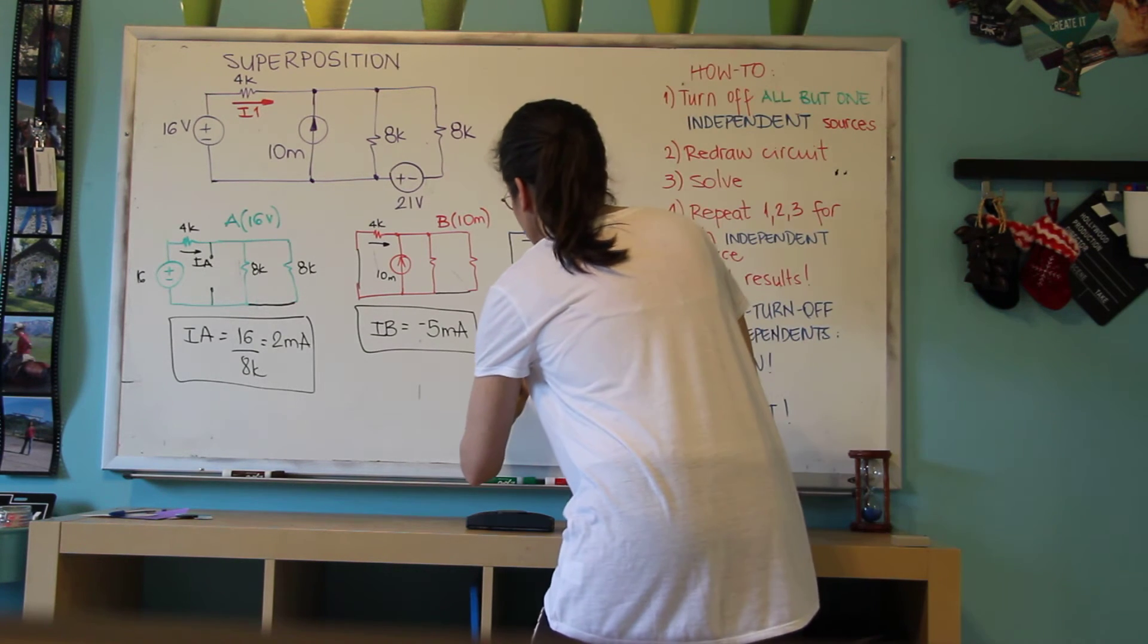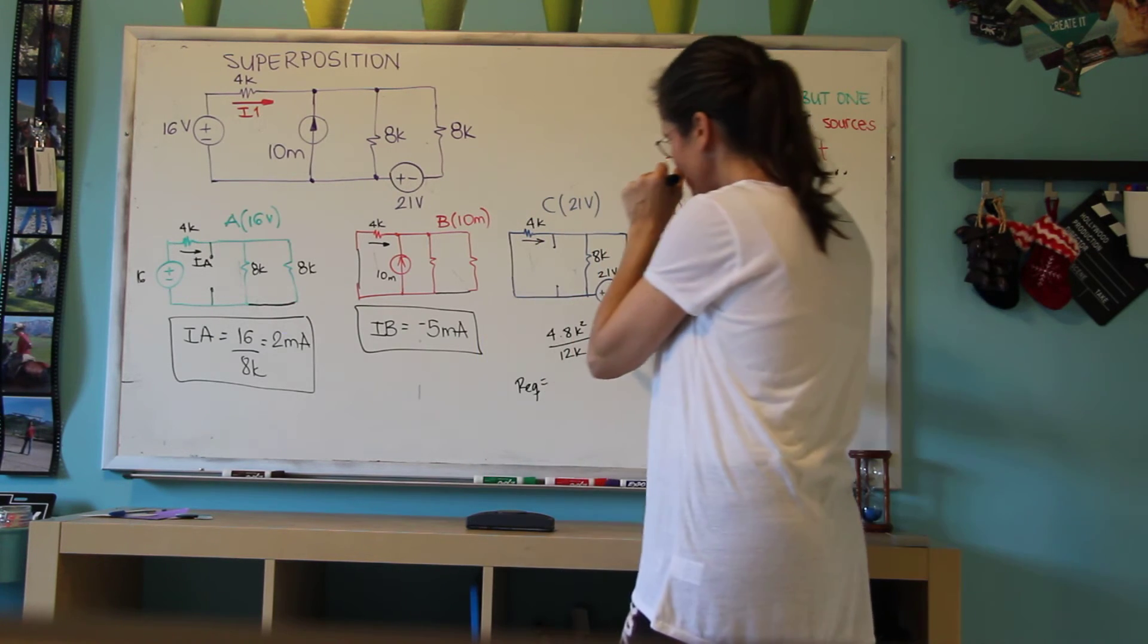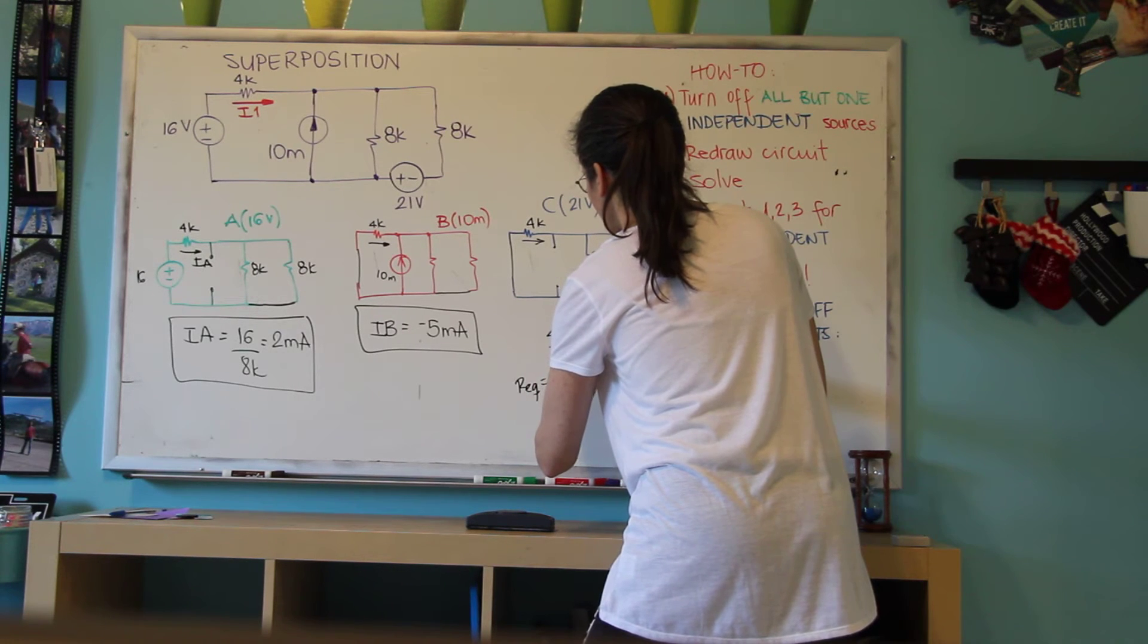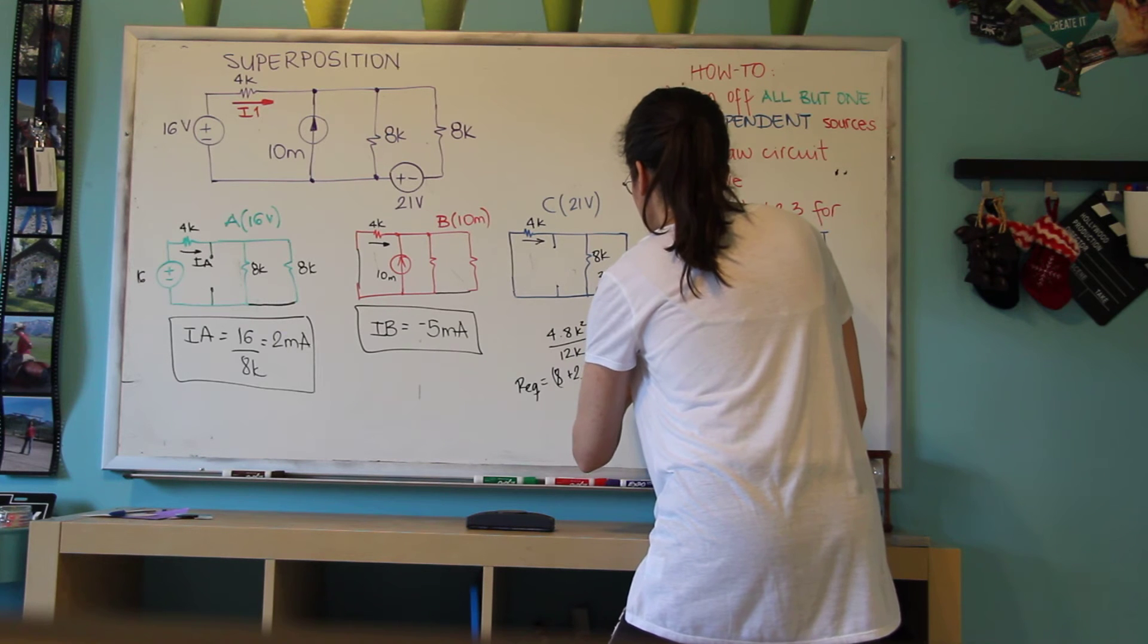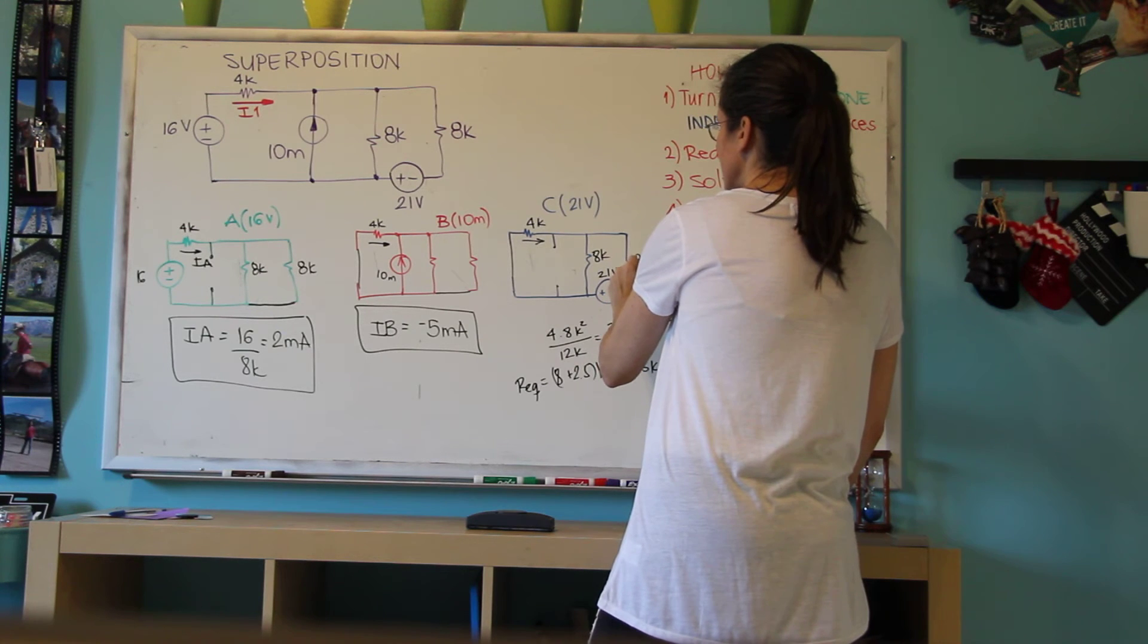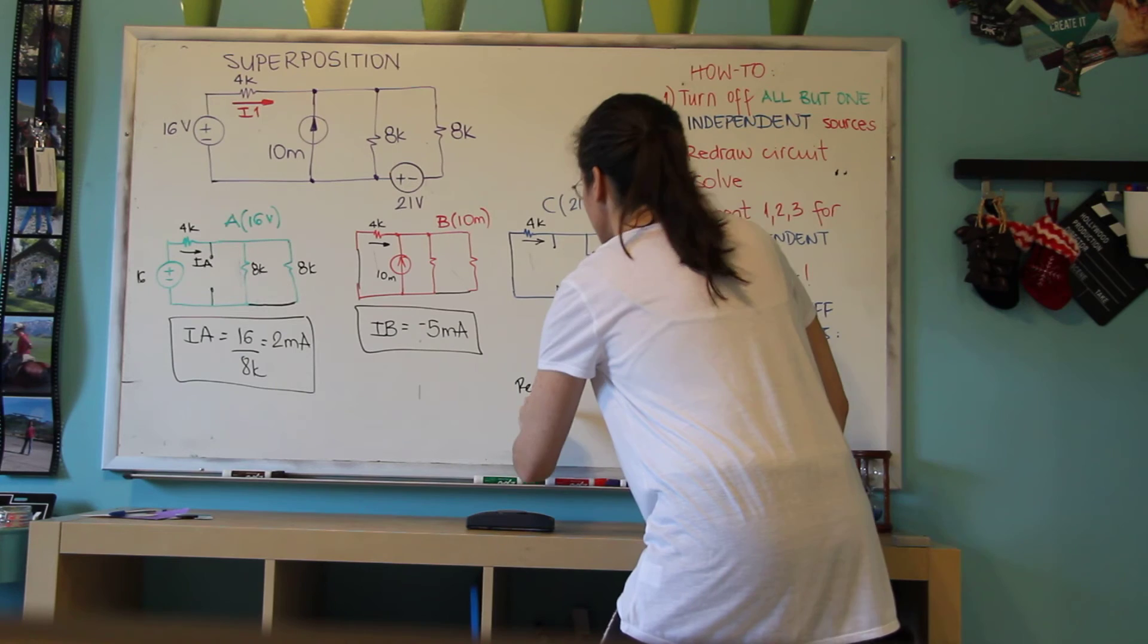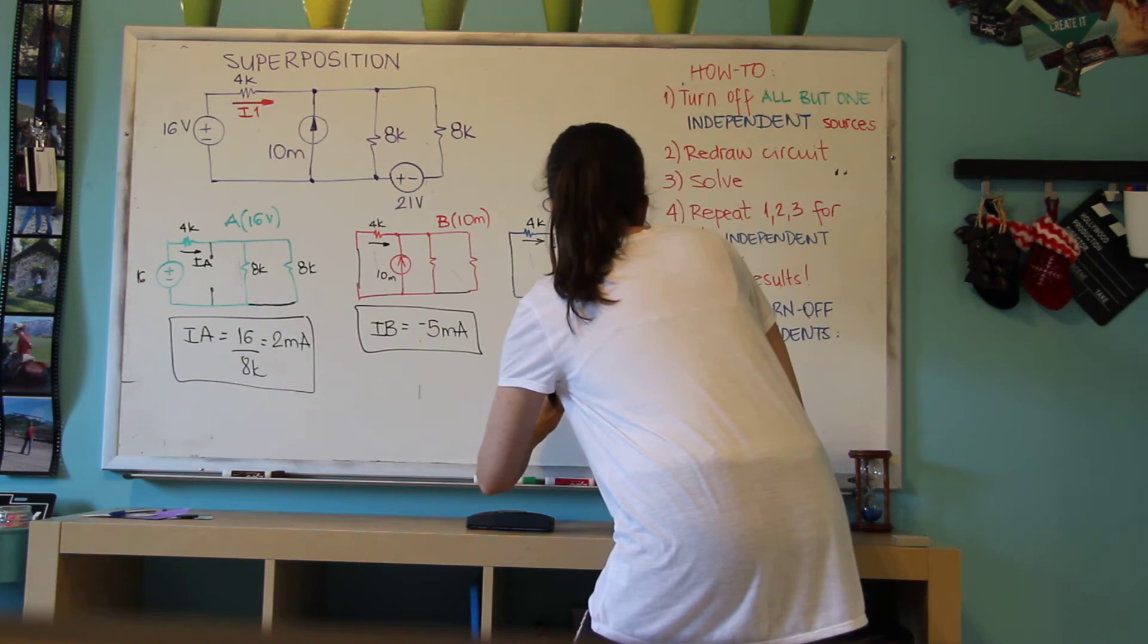So 2.5K is these two in parallel. Plus 8K is 10.5K. So the equivalent resistance that the 21 volt is seeing is 8 plus 2.5K, which is 10.5K. And the current, actually the current here is 21 volts divided by 10.5K, which is 2 milliamps.